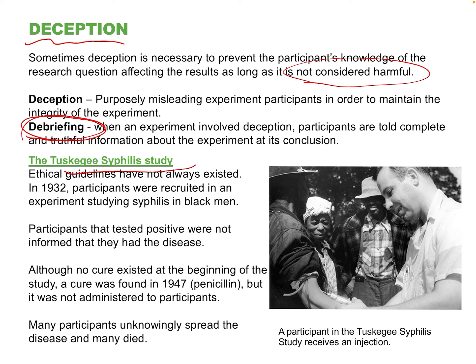You can read about the Tuskegee syphilis study from the 1930s — it was really horrible. In the Black community in Tuskegee, researchers wanted to find out what happens to people — specifically Black men — once they catch syphilis. Syphilis can be easily treated with antibiotics, but they did not treat the participants. There was no informed consent; subjects didn't know they were positive and didn't know treatment existed. That was a glaring case of poor ethical conduct — they wanted scientific understanding but took advantage of a population of people who could not stand up for themselves.